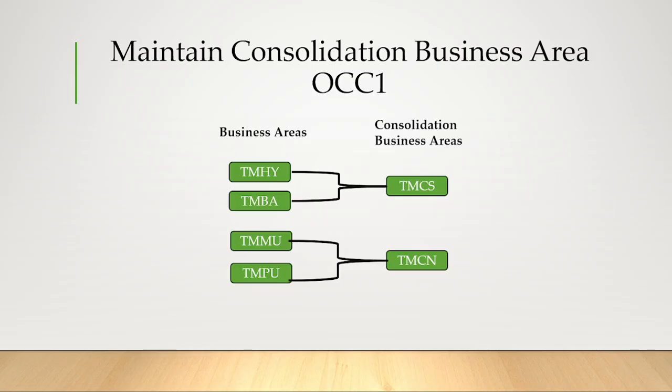The next configuration is Maintain Consolidation Business Area; the transaction code is OCC1. The question is: what is a consolidation business area? We created four business areas. Now we are going to create a consolidation business area, which is mainly used for region-wise consolidation reporting — for example, South Region Consolidation and North Region Consolidation.